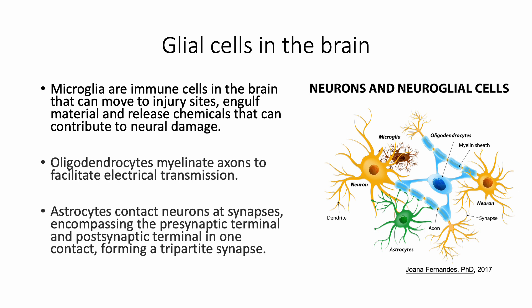To understand the tripartite synapse we need to review glial cells in the brain. Glial cells include microglia, oligodendrocytes, and astrocytes.